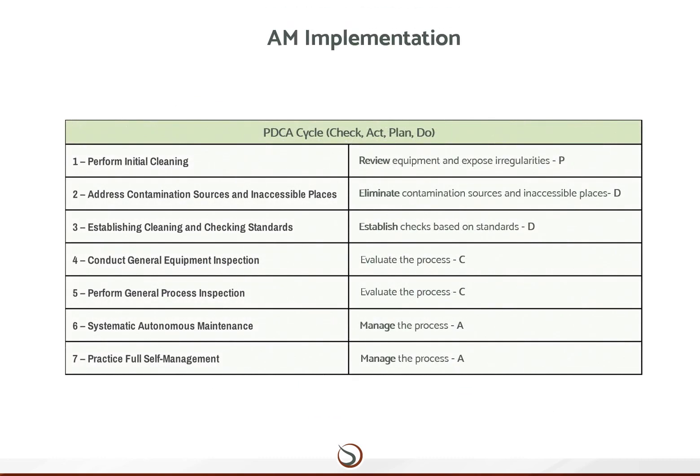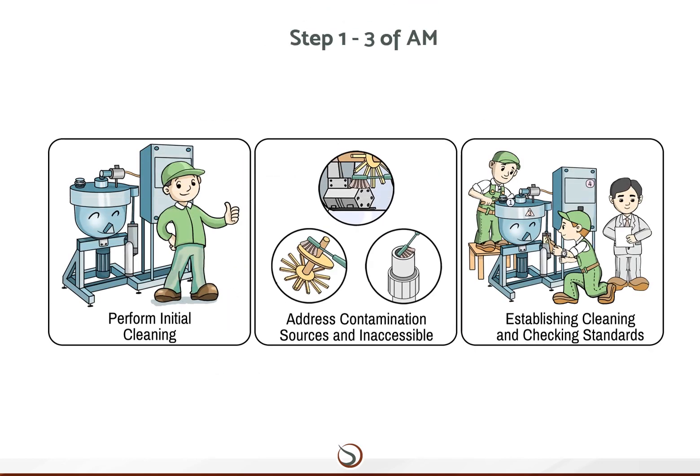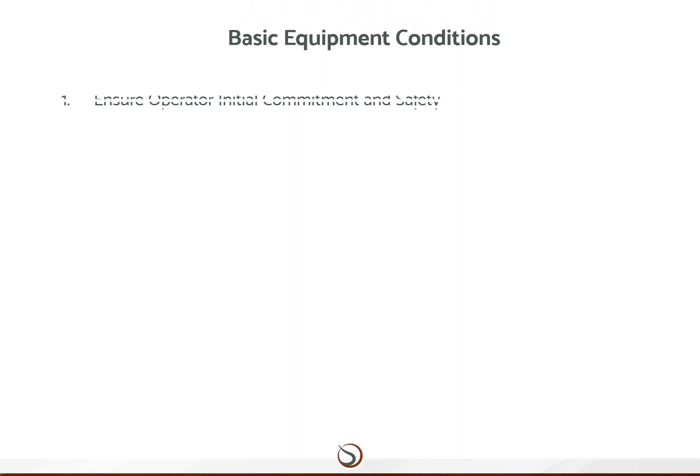Autonomous Maintenance pillar AM, as with others, is focused on the elimination of losses and their causes, first by the exposure, elimination and control of hidden defects. It promotes the establishment of optimal process conditions by cycling through the continuous improvement management cycle. Steps one through three place priorities on abolishing environments that cause accelerated deterioration, reversing deterioration, and establishing and maintaining basic equipment conditions.